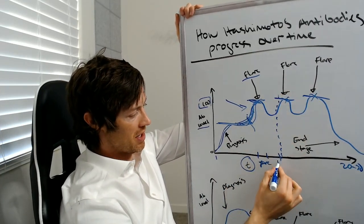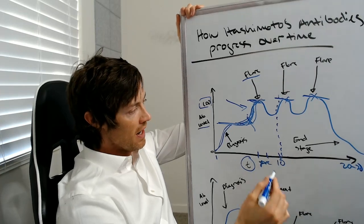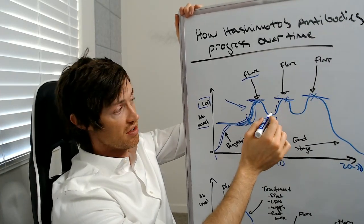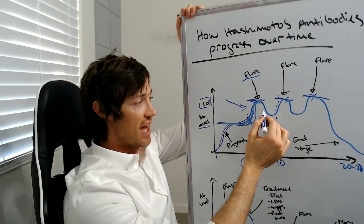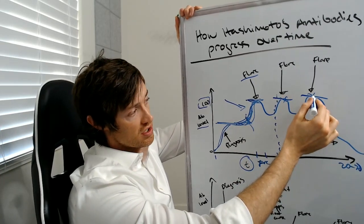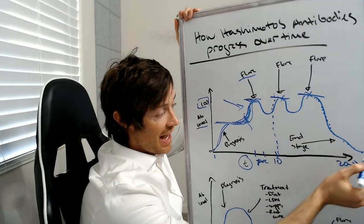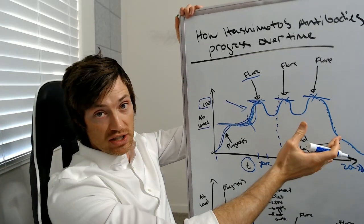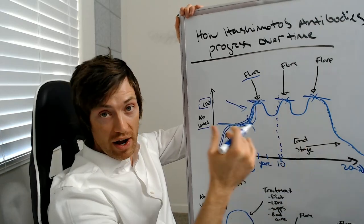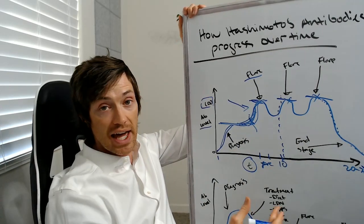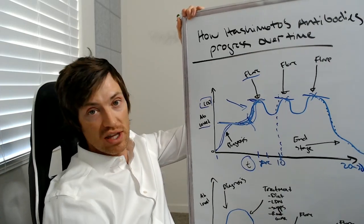Now to kind of show what happens with a normal person, let's say they haven't done any treatment. They maybe are on thyroid medication at some point here. Let's just say at year 10 they're on thyroid medication, but it's not actually treating or preventing the thyroid gland destruction in this case. So the antibodies peak a couple of extra times. And then by the time they get to about 20 years or so, their antibody levels start to fall.